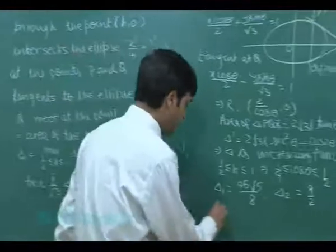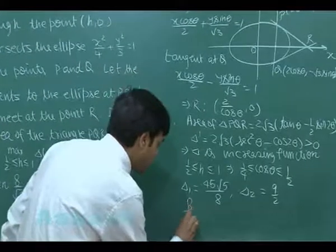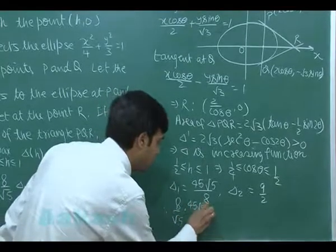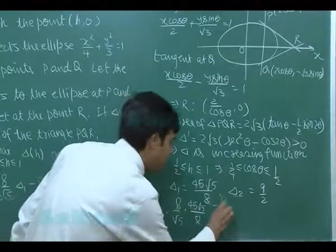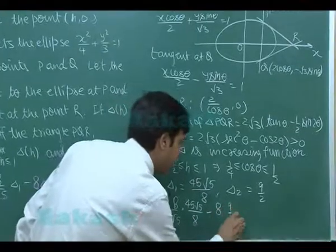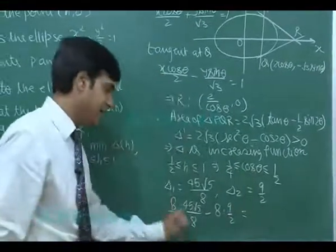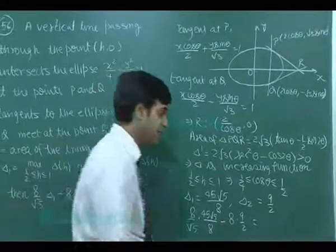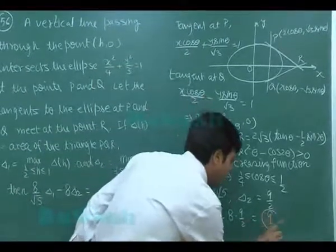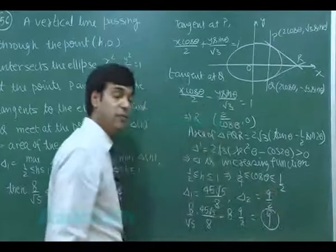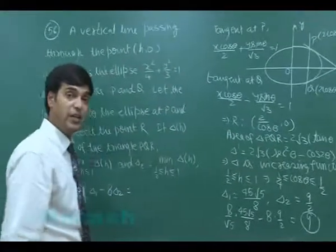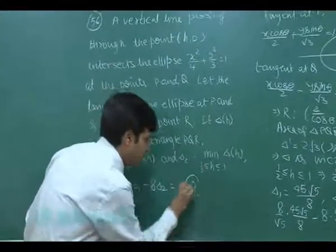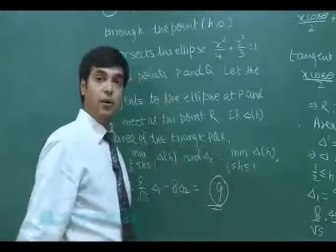My question was asking for the value of 8/√5 Δ₁ - 8Δ₂. So, it is simply 8/√5 × (45√5/8) - 8 × (9/2). We can clearly see 8 is cancelled. This is simply 45 - 36 giving me answer as 9. So, correct answer for this first integer type question of code 8 is 9.